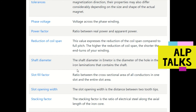Power factor is the ratio between real and apparent power. Reduction of coil span expresses the reduction of coil span compared to full pitch — the higher the reduction of coil span, the shorter the end turns of the winding.